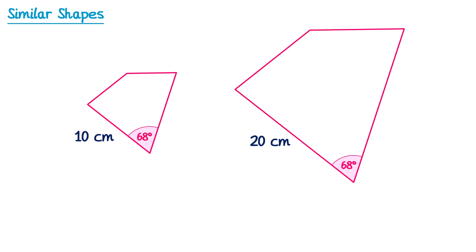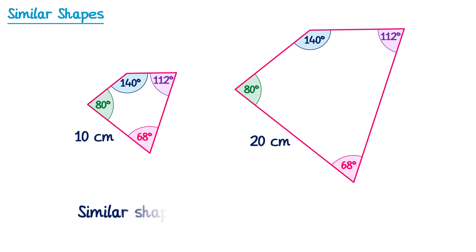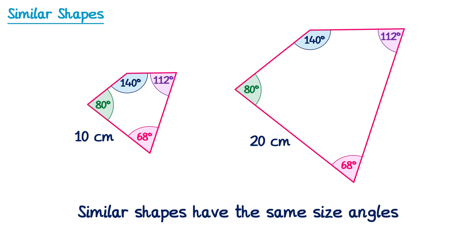This applies to all of the angles. Both of these angles are 80, both of these are 140, and these two are both 112. So when you enlarge a shape the angles stay the same. We can say that similar shapes have the same size angles.